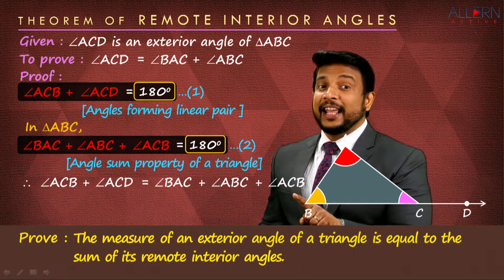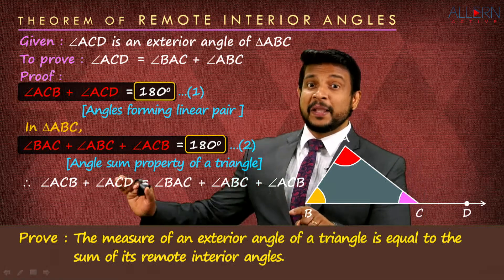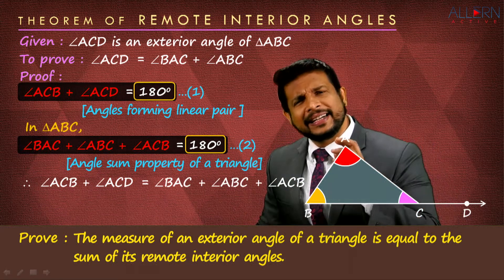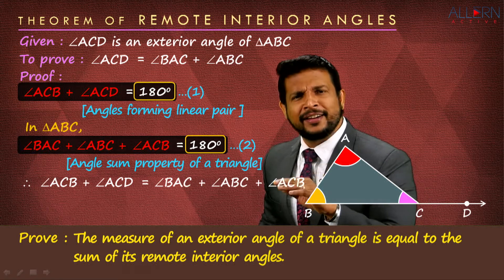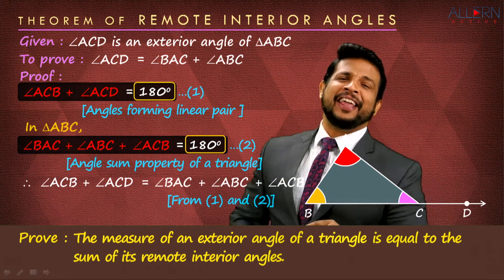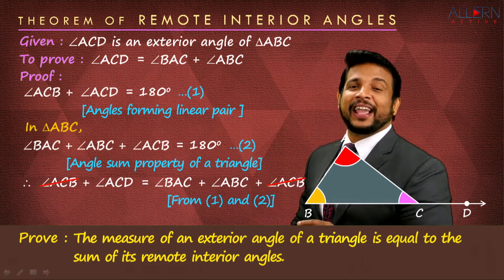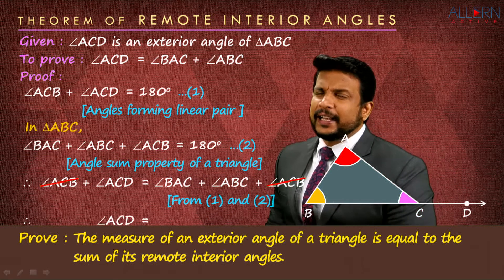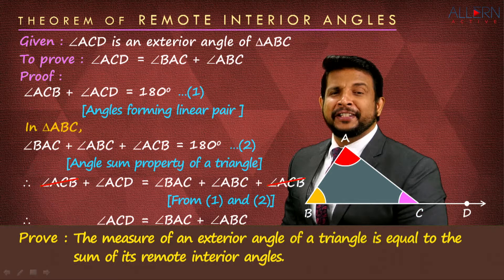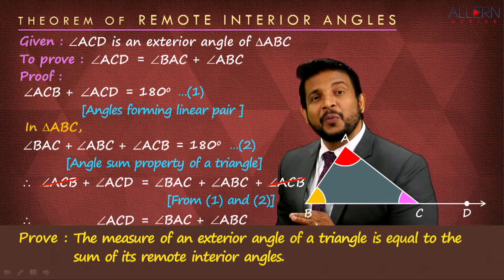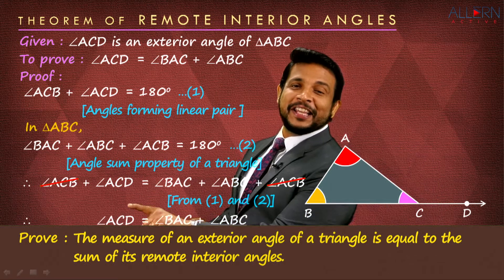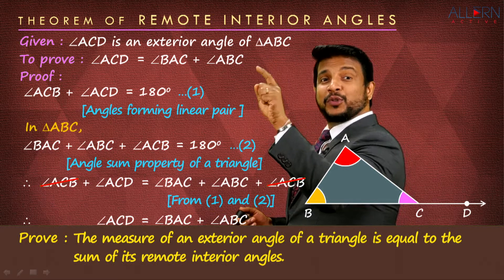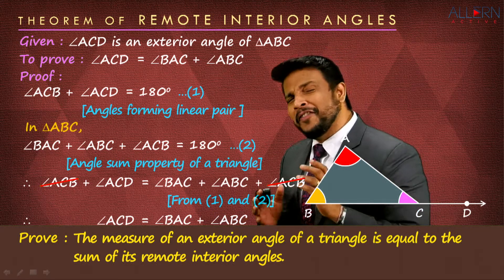Now observe: angle ACB appears on both the left-hand side and the right-hand side. So it gets cancelled. After cancellation, we have: angle ACD is equal to angle BAC plus angle ABC. That is the proof — the measure of an exterior angle is equal to the sum of the two remote interior angles. That is exactly what we were supposed to prove. Wasn't that easy? Very, very simple!